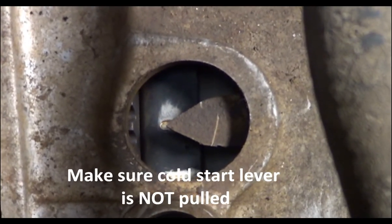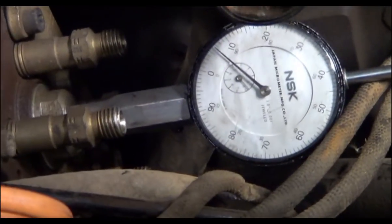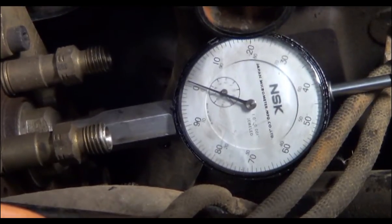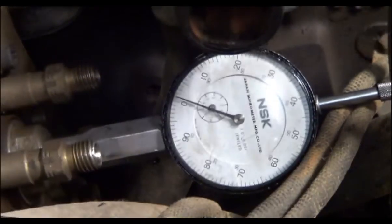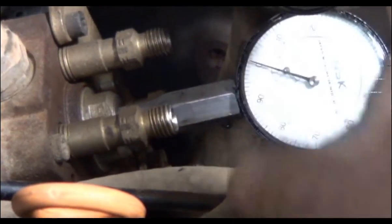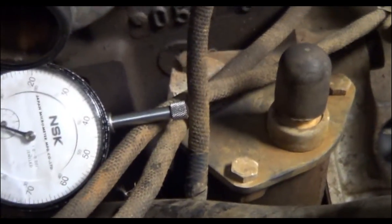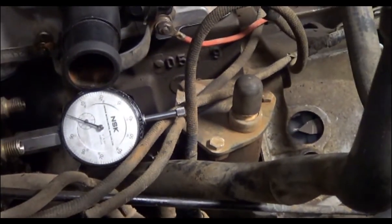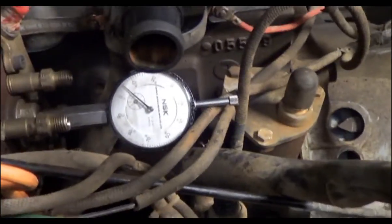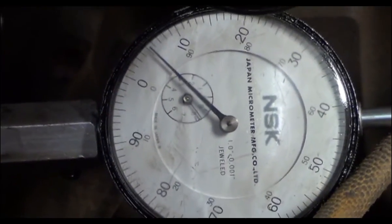Step one, set it to top dead center. Step two, turn the crankshaft backwards till the gauge stops moving. Okay, it stopped. Set your gauge to zero. Turn the crankshaft forward till top dead center. Trying to watch both top dead center and the gauge. Nice and slow. Stop. And our gauge has moved off zero about five thousandths.